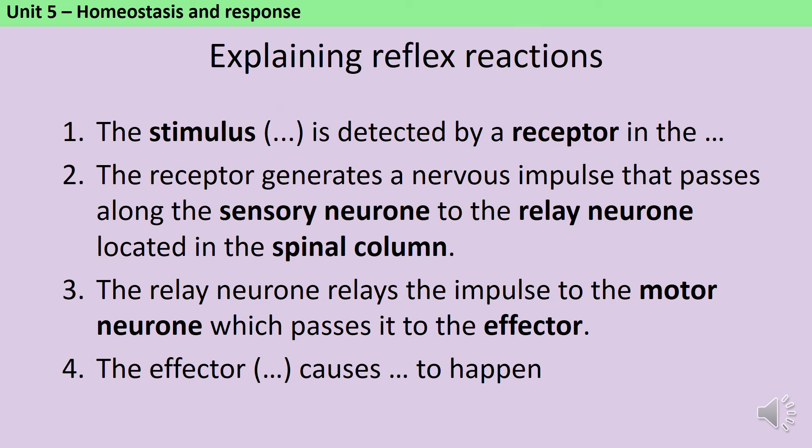So when you approach these questions about reflex reactions, we start off by saying the stimulus, and naming whatever the stimulus is, is detected by a receptor in wherever it is, in the eye, in the ear, in the skin. The receptor generates a nervous impulse or an electrical impulse that passes along the sensory neuron to the relay neuron, which is located in the spinal column, or you could say the central nervous system. The relay neuron then relays that impulse to the motor neuron, which passes it to the effector. And then the effector, which in this instance was the muscle but could be a gland, causes the hand to be moved out of the way.